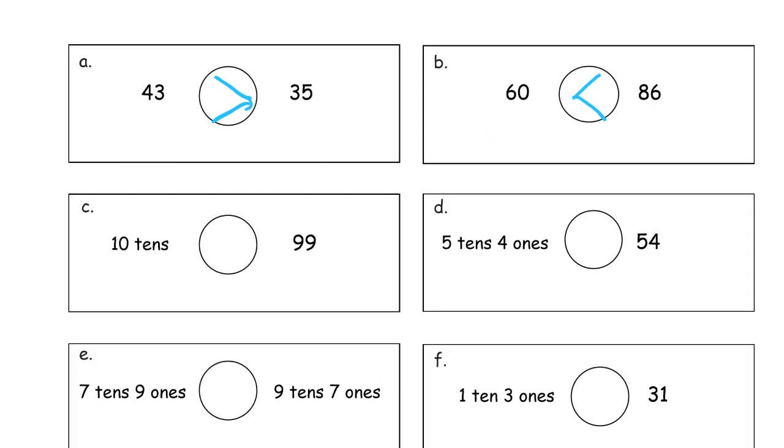10 tens is the same as 100. And this is 99, so we know 100 is greater than 99. 5 tens 4 ones is 50 and 4, so 50 plus 4, that's 54. They're both 54, so 54 is equal to 54, or 5 tens 4 ones is equal to 54.